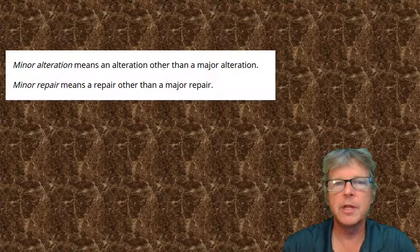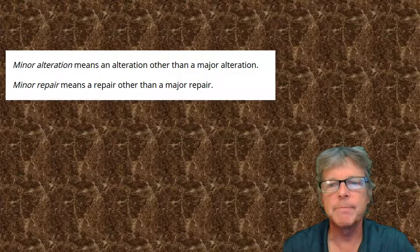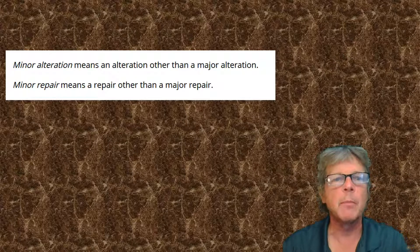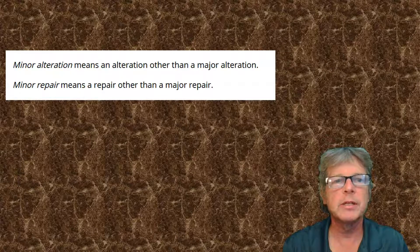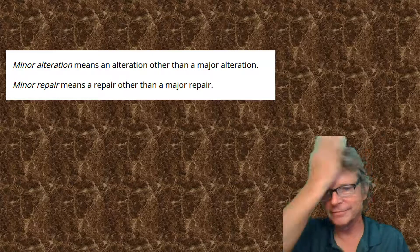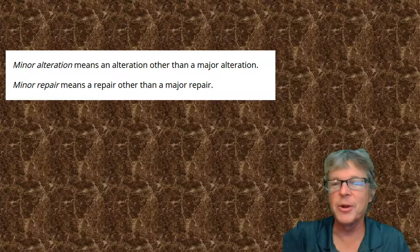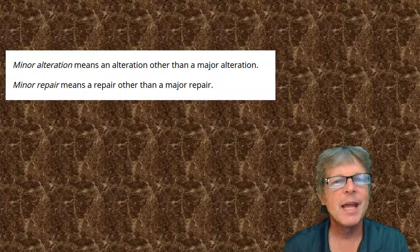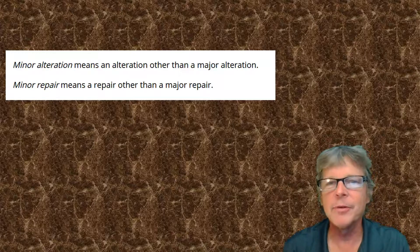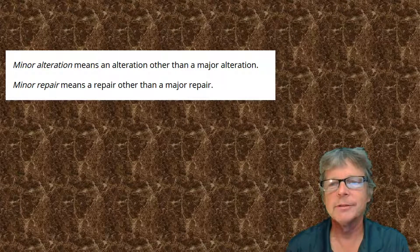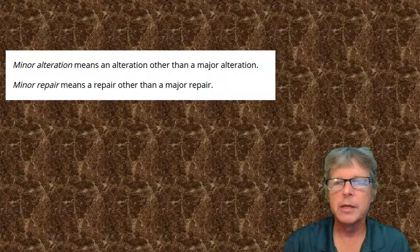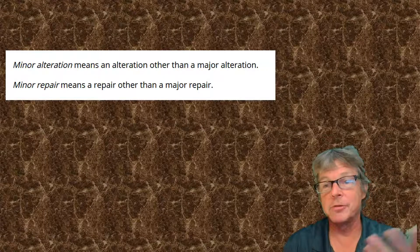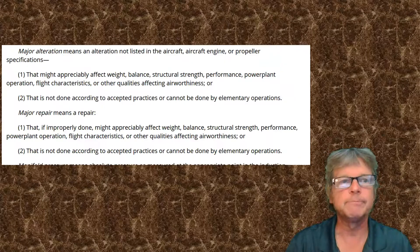The first thing we're going to do is look at the definition. The FAA has a definition for minor alteration: a minor alteration is anything other than a major alteration. A minor repair means a repair other than a major repair. So now we know what minor is — minor is not major.